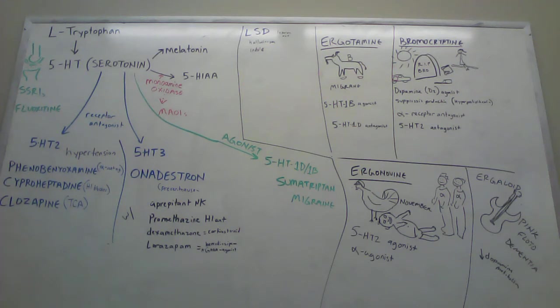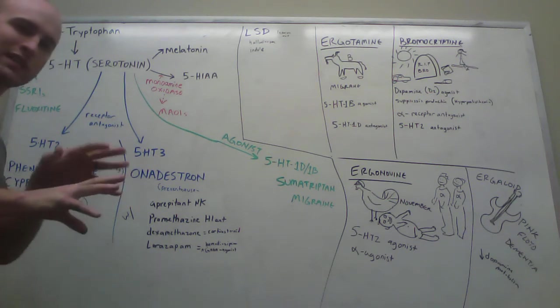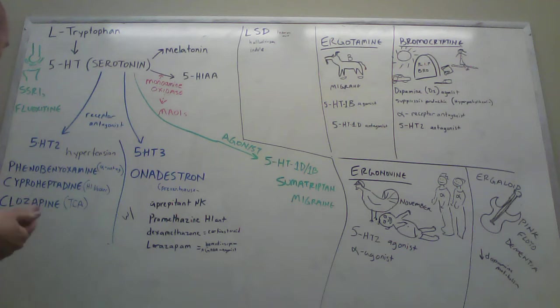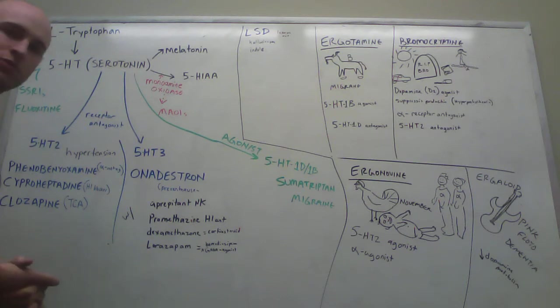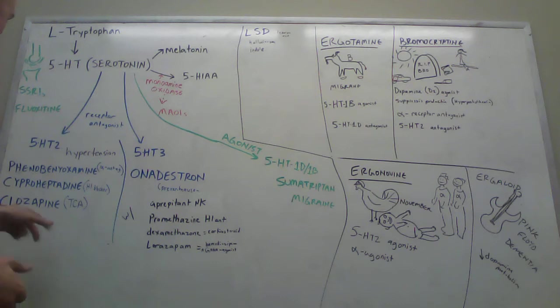There are three of them listed here that block this. Phenoxybenzamine - this is an alpha antagonist. There's also cyproheptadine, which we talked about in the histamine lecture. That was a first-generation H1 blocker. Apparently this also blocks 5-HT2 receptors, these serotonin receptors.